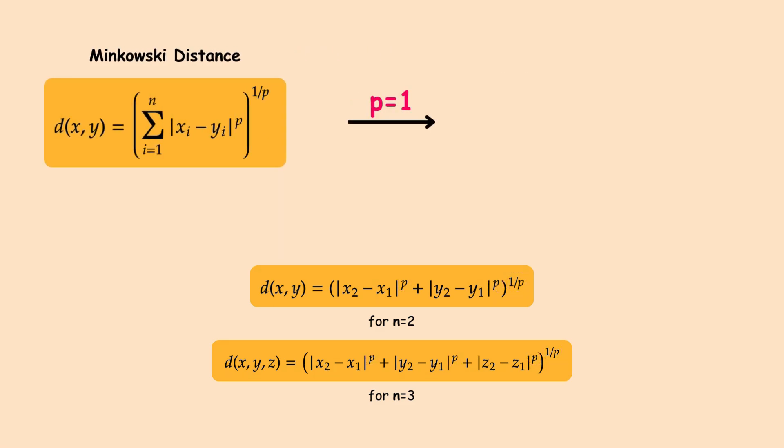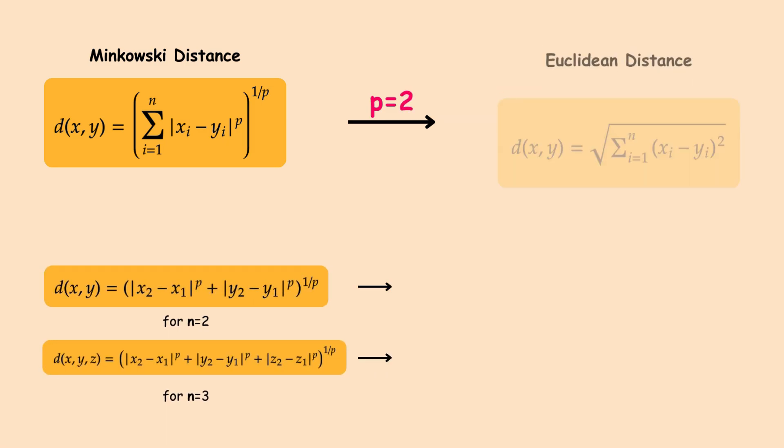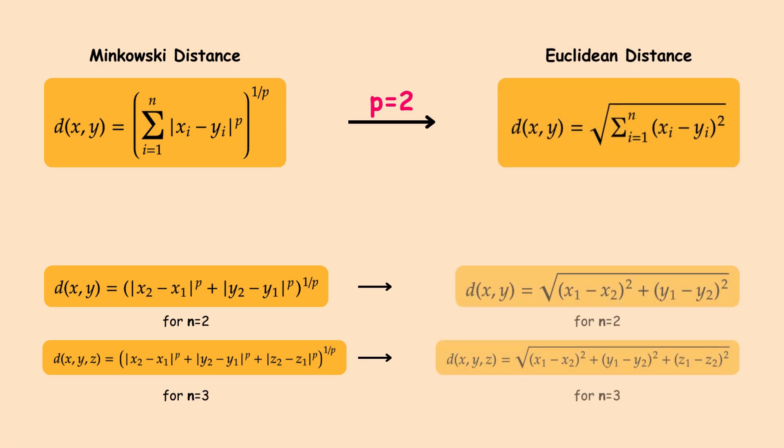When P is set to 1, the Minkowski distance becomes the Manhattan distance. It measures the distance along the grid lines. When P is set to 2, the Minkowski distance becomes the Euclidean distance. This is the straight-line distance, like using a ruler.